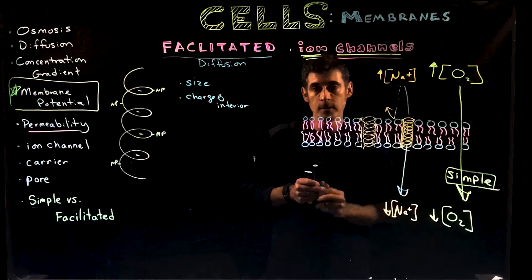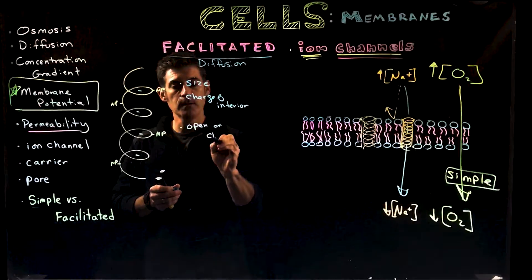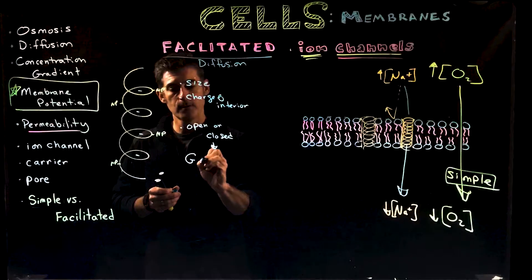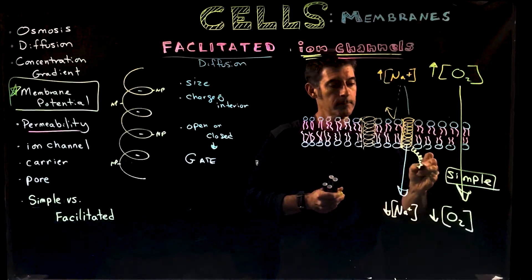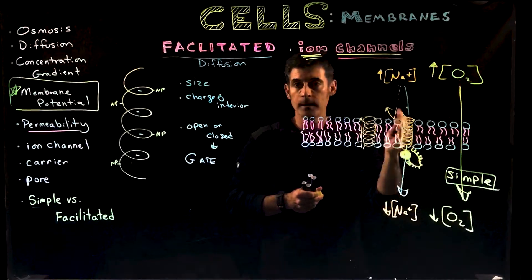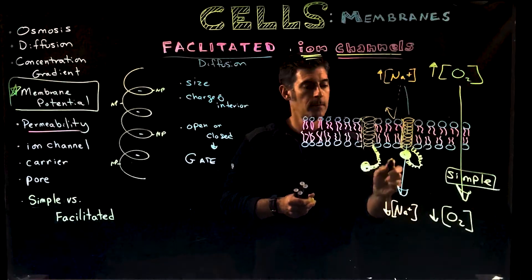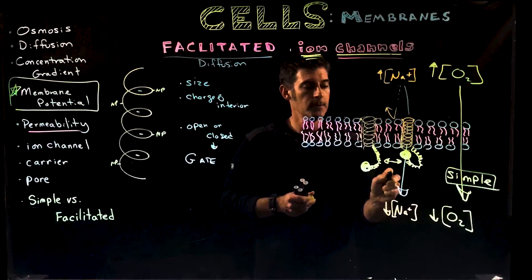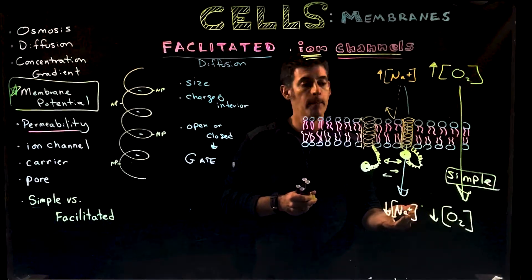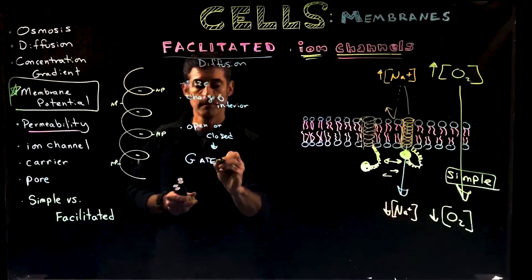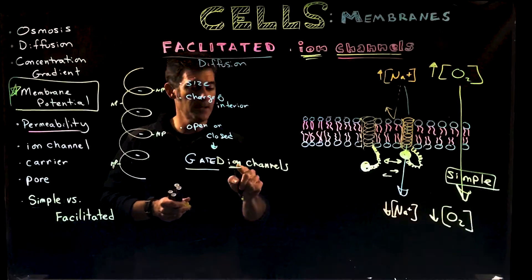Channels aren't always open — they can be open or closed. When a channel can open and close, it has what we call a gate attached to it. Gates are extensions of the protein that can fold in on themselves and plug the channel, blocking it, or they can change shape and open up. You can close the channel by closing the gate, or open it by opening the gate. This extra protein is called a gate, and we call these gated ion channels.